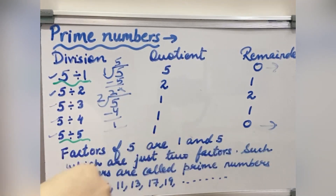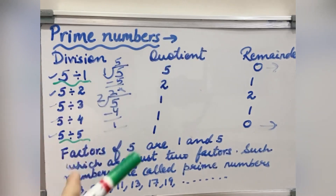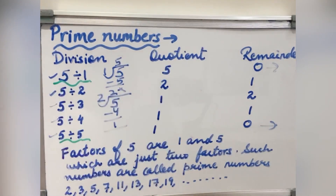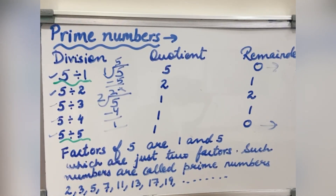Such numbers which have only 2 factors are called prime numbers. Other examples of prime numbers are 2, 3, 5, 7, 11, 13, 17, 19, and this way we can check and find many prime numbers. And as I told you, any composite number can be expressed as a product of prime numbers — that is their special power.